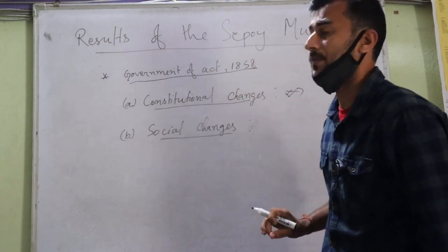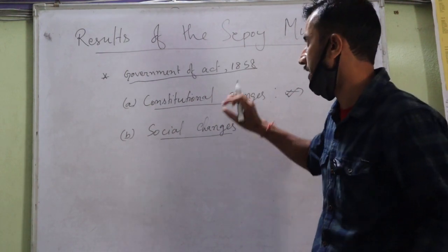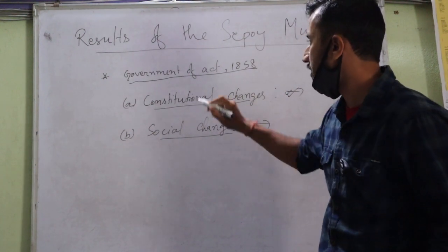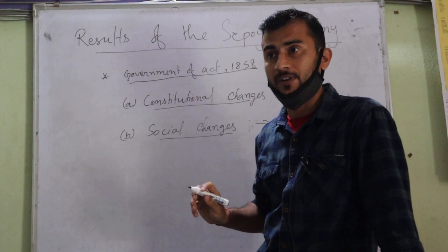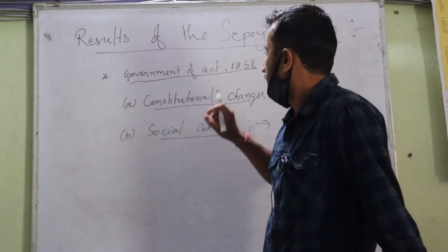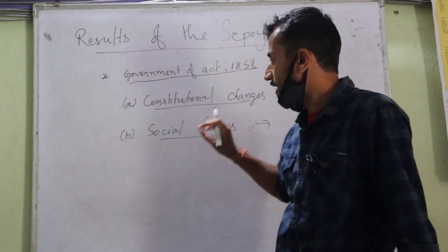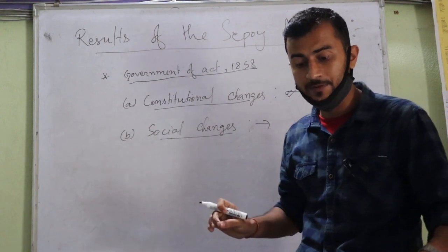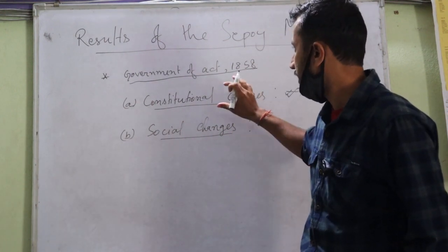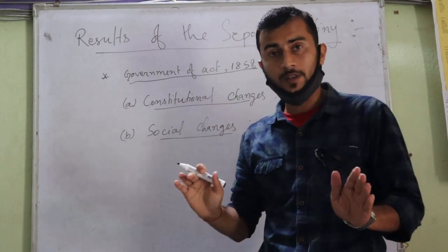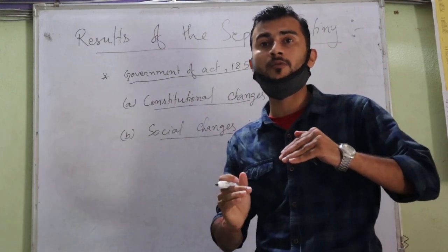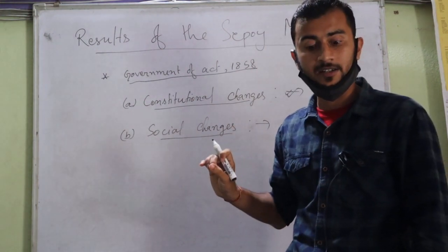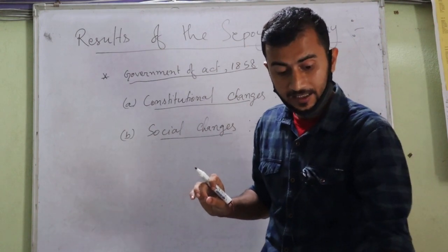Those are the results of the Sepoy Mutiny through the Government of India Act. The second major outcome was social changes. After the Sepoy Mutiny and the 1857 revolt, and after framing the Government of India Act, some social changes also occurred in Indian society. For the first time, Indian society started to modernize — the modernization process was introduced into Indian society.